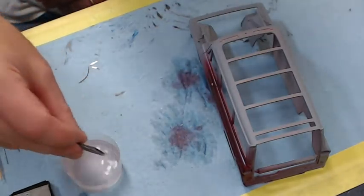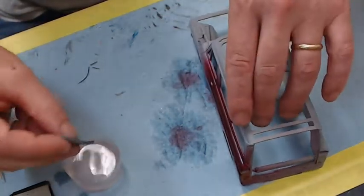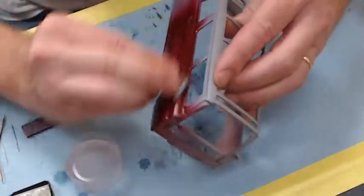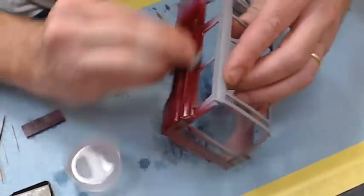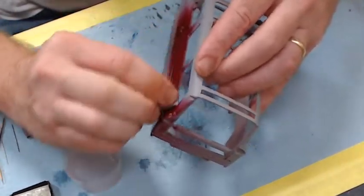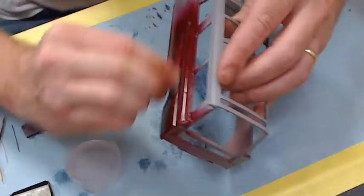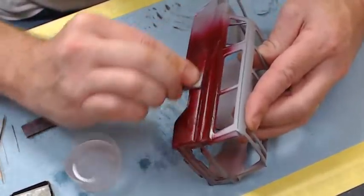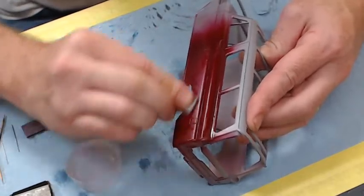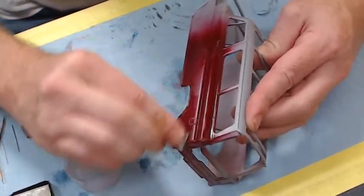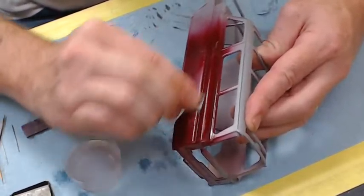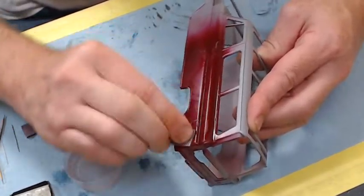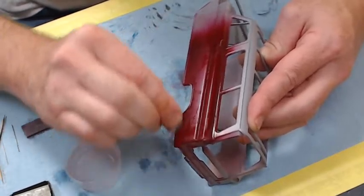What we're going to do is take a piece of this sanding sponge, this is 3000 grit, and we're going to go in and intentionally sand through this burgundy candy. Then we'll dry all this off, and I'll show you the damage that we did to it. And then we're going to go back in and put some more burgundy candy on here and show you how to blend it.